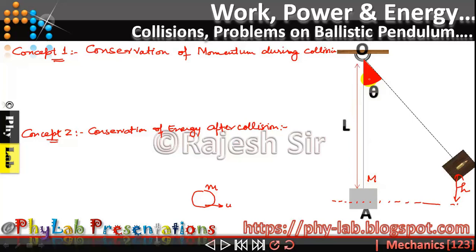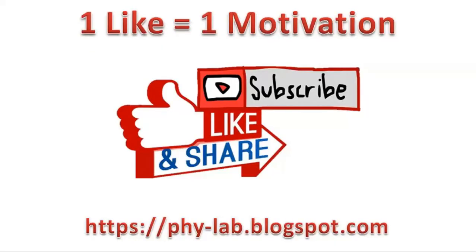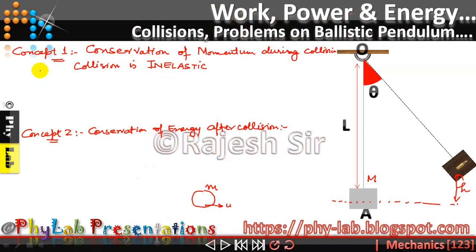Let's understand and build up onto the concept. It is based on two concepts: conservation of momentum during collision, and conservation of energy after the collision. Now, what type of collision are we observing? The collision is an inelastic collision. Remember, whether it's an elastic or inelastic collision, momentum is always conserved in both types. Momentum before collision...